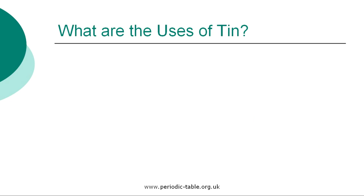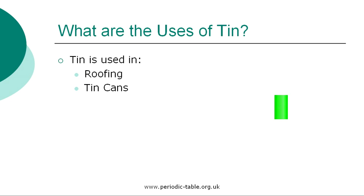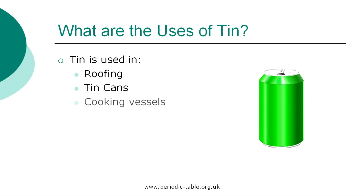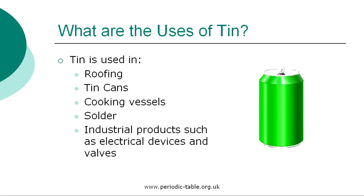Once the properties of an element have been established, we then have the ability to identify how it can be used. A large amount of tin is made into tin plate by dipping thin steel sheets into the melted metal. Owing to the way in which tin resists the action of air and dilute acids, tin plate is used in many ways, such as in roofing and in the manufacture of tin cans, cooking vessels, and similar articles.